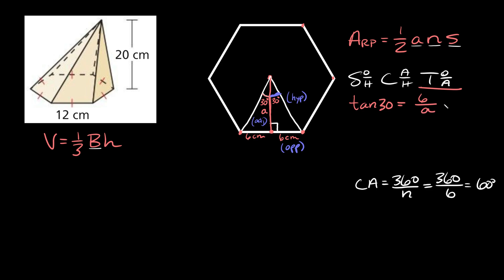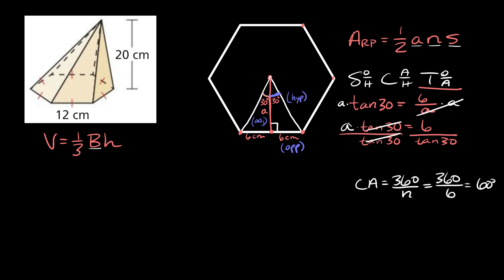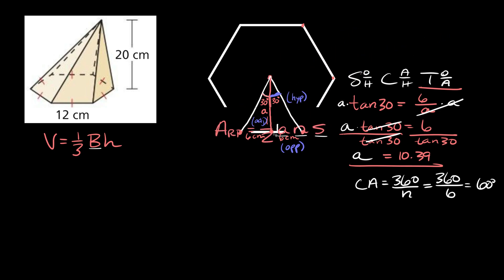To solve for A, we multiply both sides by A so they cancel on the right side, giving us A times tangent of 30 equals 6. Then dividing both sides by tangent of 30, we get A equals 6 divided by tangent of 30, which is approximately 10.39. So that's the length of the apothem A.